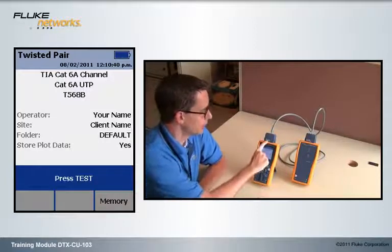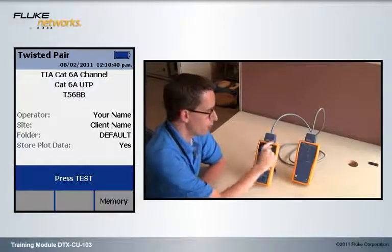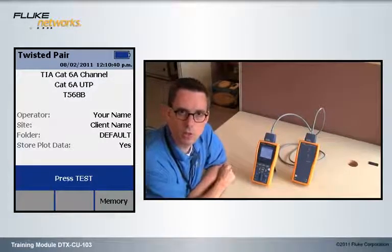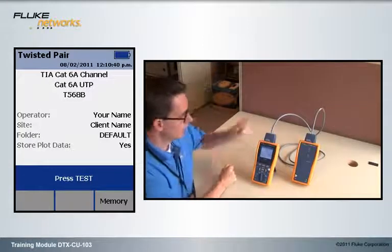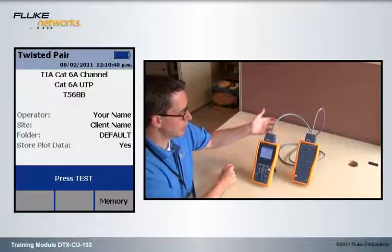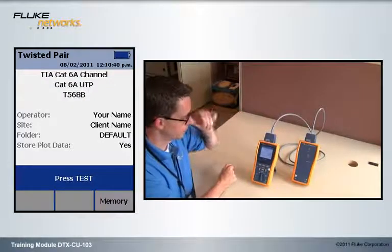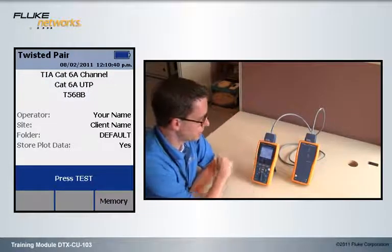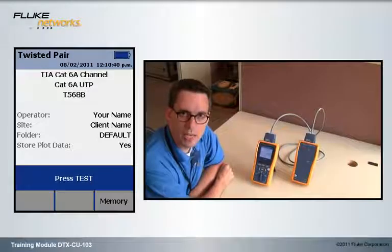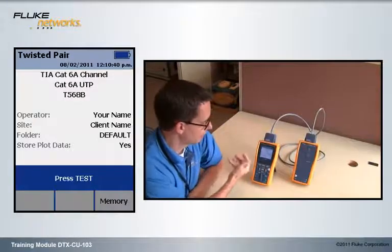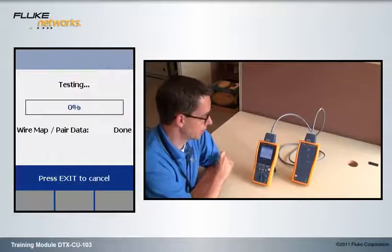So on my DTX here, I have the two channel adapters. This is what ships with the DTX keyboard analyzer, and I've connected my CAT6 patch cord from the main to the remote. My test limit has been selected as TIA CAT6A channel. I'm good to go. Let's hit that test key.